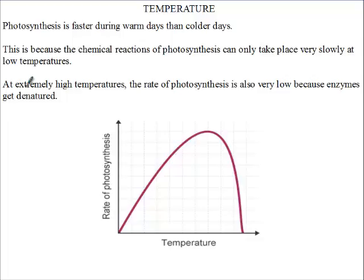At extremely high temperatures, during very hot conditions, the rate of photosynthesis is also very low because the enzymes are denatured. So the temperature needs to be just right.